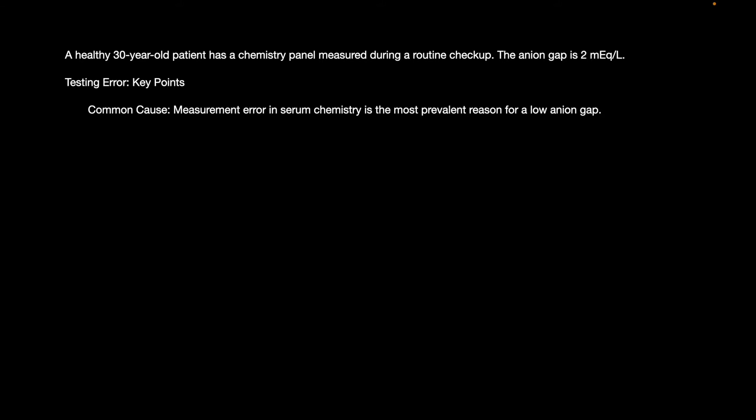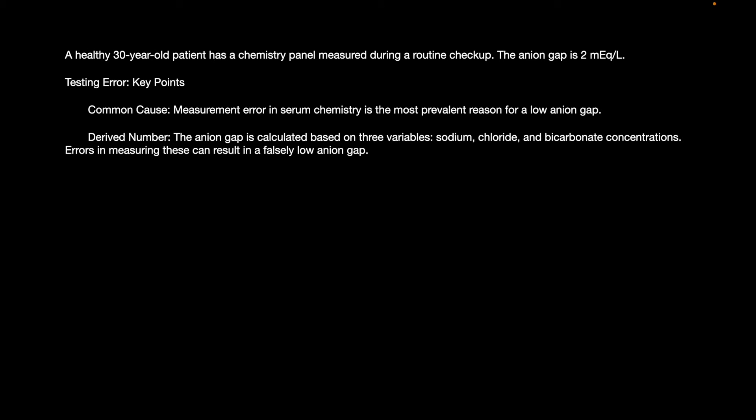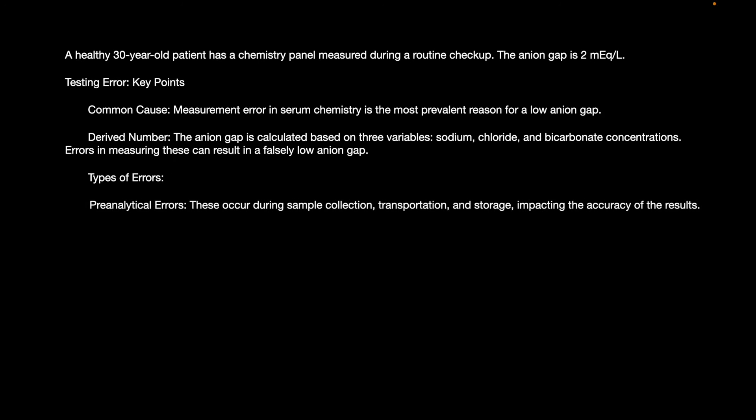The measurement error in serum chemistry is the most prevalent reason for a low anion gap. The anion gap is calculated based on three variables: sodium, chloride, and bicarbonate — error in measuring any of these can result in an error. A pre-analytical error occurs during sample collection, transportation, and storage, which impacts the accuracy of results.